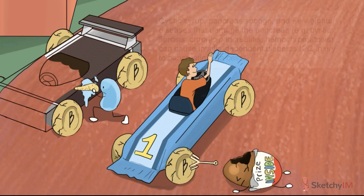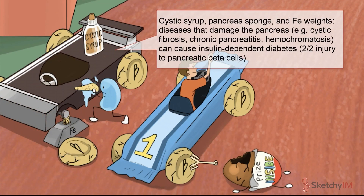Diabetes can also result from certain diseases that damage the pancreas. Cystic fibrosis, for example, is associated with exocrine and endocrine pancreatic insufficiency, symbolized here as a bottle of cystic syrup car wax, evoking an image of the gunky secretions that plug up the ducts and airways of patients with CF. Chronic pancreatitis, symbolized as usual by a leaky pancreas sponge, is associated with glucose intolerance and even overt diabetes mellitus late in the course of disease. And thirdly, that iron weight is our symbol for hemochromatosis — in this disease, iron deposits in the pancreas, resulting in decreased beta cell function and apoptosis. Patients with diabetes caused by these pancreatic diseases are usually insulin-dependent, like patients with type 1 diabetes.